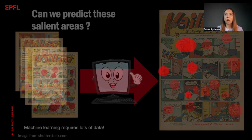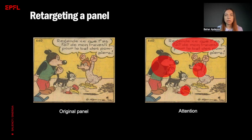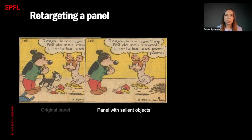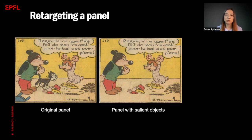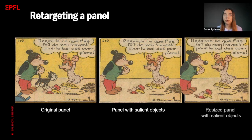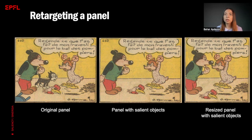Let's see an example of how to use this attention data. In this panel, we have two characters and some objects. Our model has predicted the text, characters, and the costume as salient regions. Therefore, we can delete the remaining objects since we don't pay attention to them anyway. You can see the difference between the two panels here — we have removed the cat and the stool. Furthermore, we can resize the panel as seen in the last image. In the end, we obtain a modified version of the original panel while keeping the most important regions, thanks to the attention data.